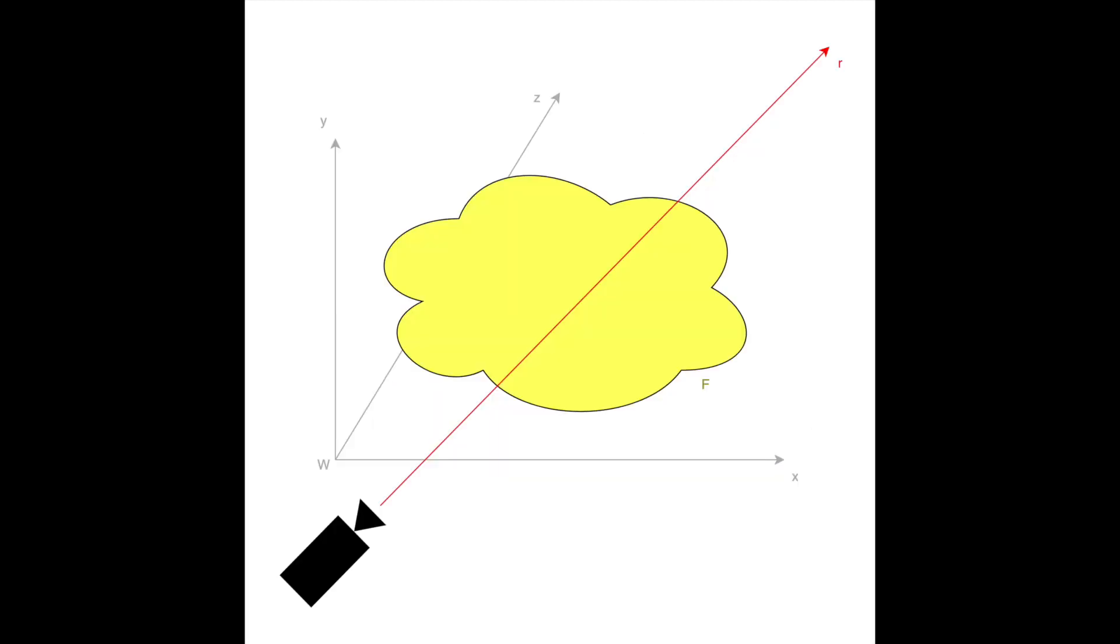Once we have projected the ray, we sample at various points along it by taking the direction of the ray d and the position of each point x and entering them into the network, also known as forward propagation, to get a colour and volume density for each point.